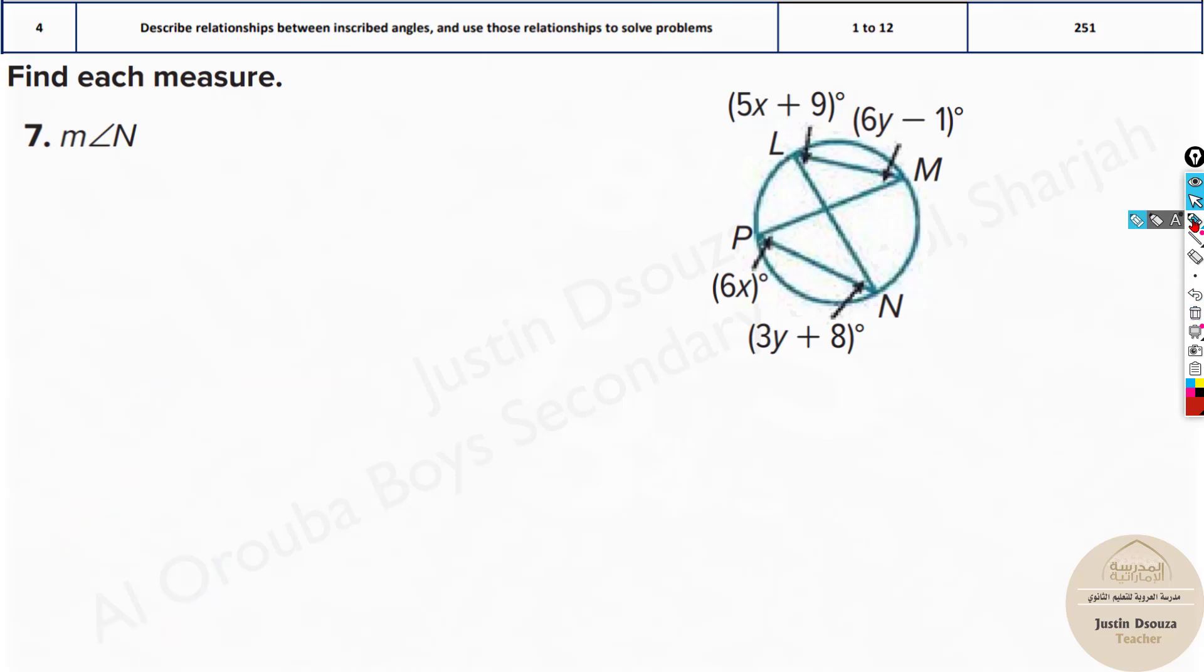And now we need to find the measure of angle N. This is a little different type of question. We know a few of the angles. But look at these sides. This is inscribed and this is inscribed. Where does it touch? P and L.